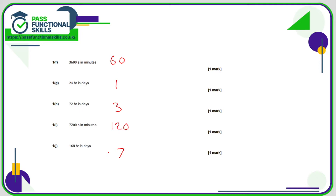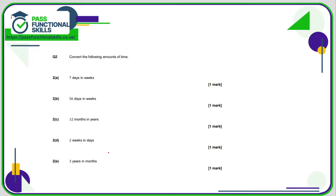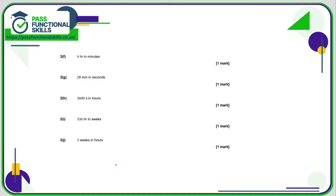Question number 2 — we can use a calculator. 7 days is one week, so how many 7s go into 56 days? 56 divided by 7 is 8, so that's 8 weeks. 12 months is one year. Two weeks is how many days? One week is 7 days, so two weeks is 14 days.